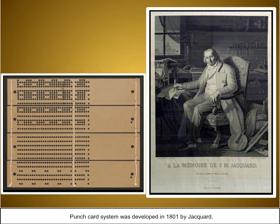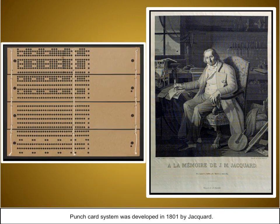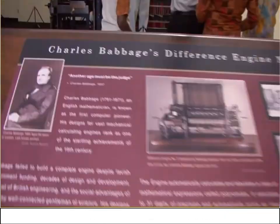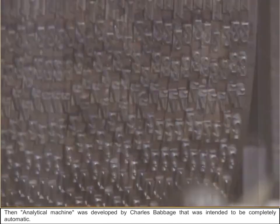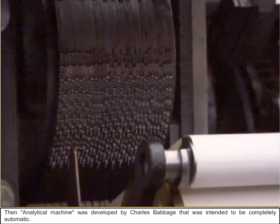Punch-cord system was developed in 1801 by Jacquard. Then, the analytical machine was developed by Charles Babbage that was intended to be completely automatic.